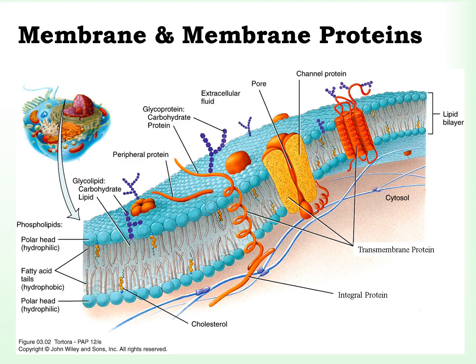Embedded into this membrane are a host of membrane proteins. The membrane proteins fit into three distinct categories. The first is referred to as the integral protein, which is on the intracellular side and serves as an anchorage point to the other two types of proteins.